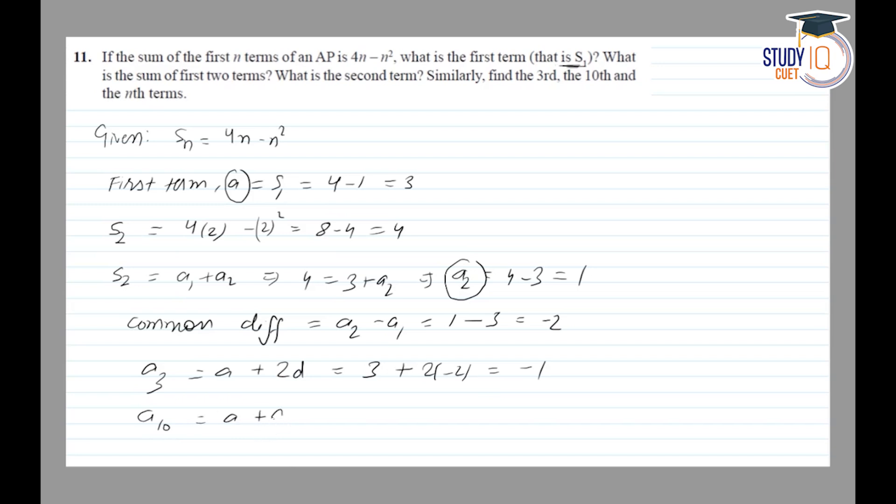a10 will be a plus 9d. a is 3 plus 9 into minus 2, so this is 3 minus 18, which is minus 15. Now the nth term an.